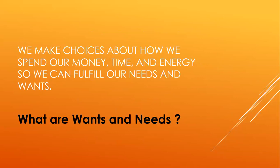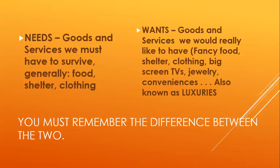We make choices about how we spend our money, time, and energy so we can fulfill our needs and wants. Needs are the goods and services we must have to survive — generally food, shelter, and clothing. Wants are the goods and services we would really like to have: fancy food, shelter, clothing, big screen TVs, jewelry, conveniences — also known as luxuries.